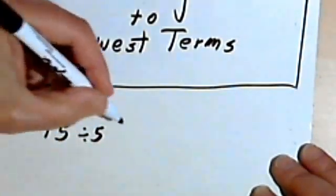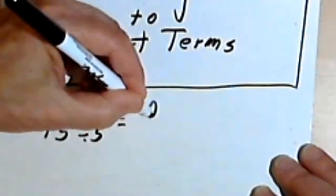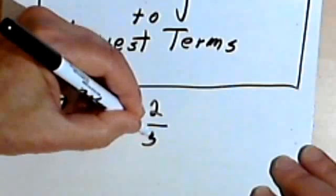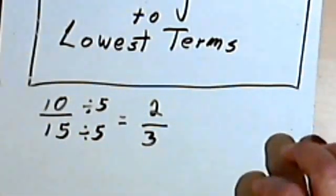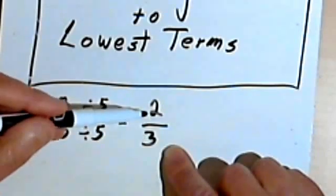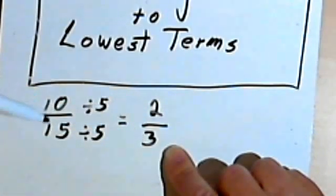When we divide the 10 by 5, we get a 2. And dividing 15 by 5, we get a 3. So 2 thirds is a reduced version, or a simplified version, of the fraction 10 fifteenths.